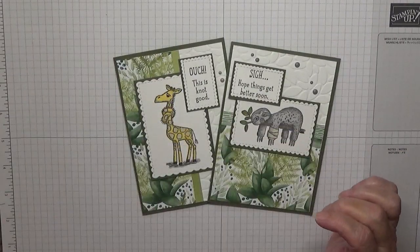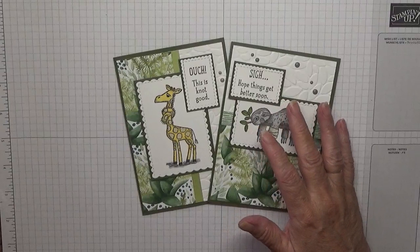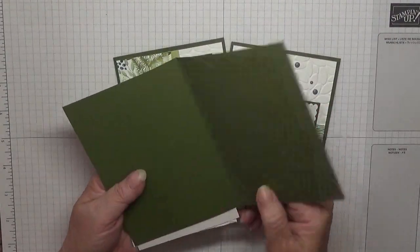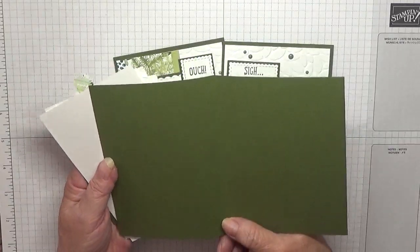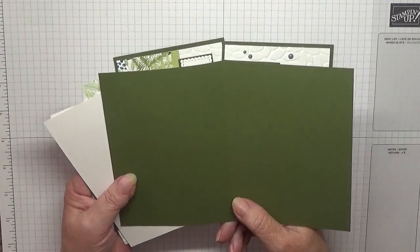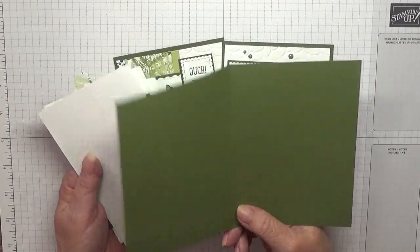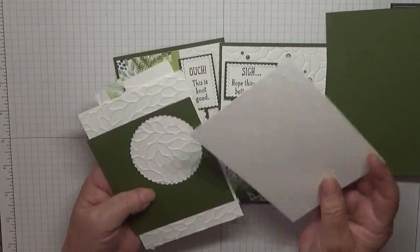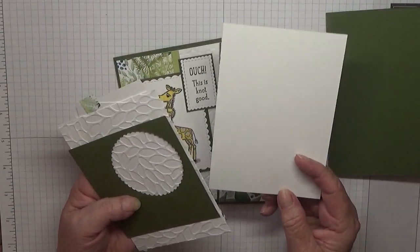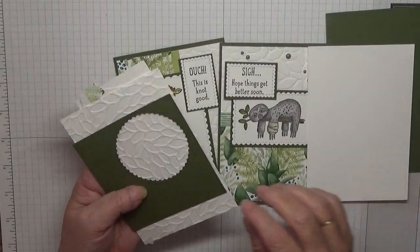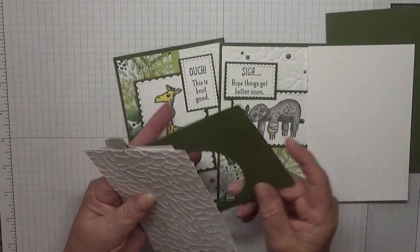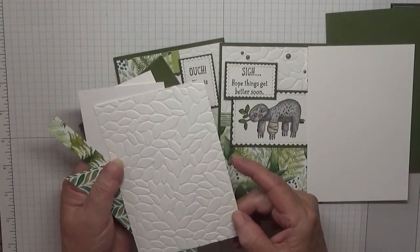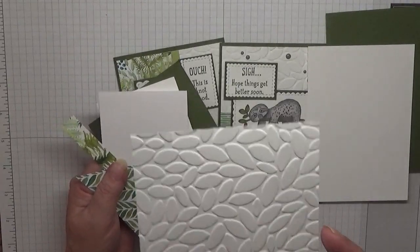Card wise, I have a mossy meadow card base of eight and a quarter by five and seven eighths scored at four and one eighth, folded in half. I've got a piece of white at five and five eighths by three and seven eighths and I've embossed this in the leaf embossing folder.